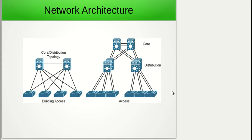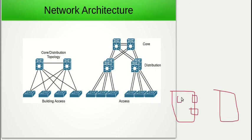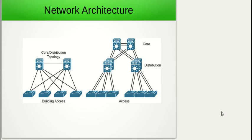The collapsed core would be used when we want scalability and redundancy and expect future growth, but our network isn't yet big enough to justify spending money on the full three-tier hierarchical model. Instead, the core and distribution layers are combined into one function, allowing us to connect our access switches and devices in different buildings together. I hope this has been informative for you, and I'd like to thank you for viewing.